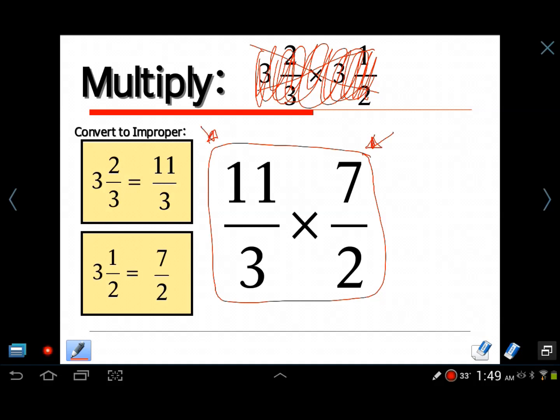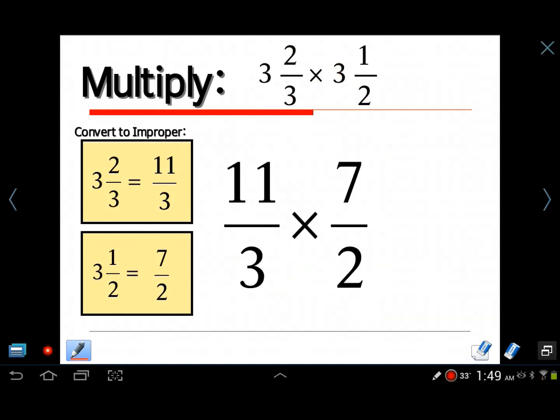Now the first thing I'm going to do is I'm going to look for any cross-cancelling. I'm going to look for some common factors there. For instance, 11 and 2. Do they have any common factors? Well, the factors of 2 are 1 and 2, and the only number that goes into 11 out of those factors is 1, which does nothing. Same thing with 7 and 3. They have no common factors. What I'm left with is just multiplication. I'm going to multiply left to right: 11 times 7 and 3 times 2. 11 times 7 is 77. 3 times 2 is 6.